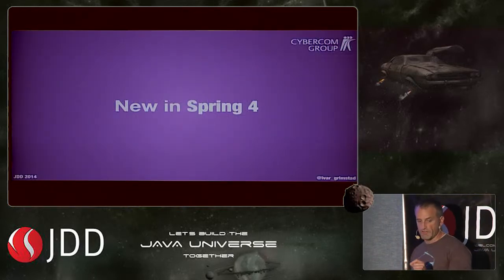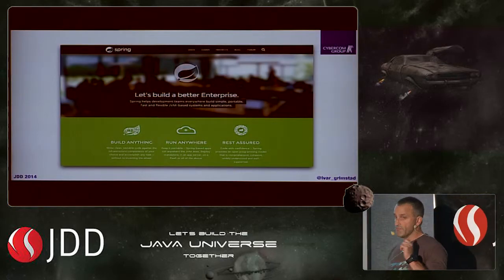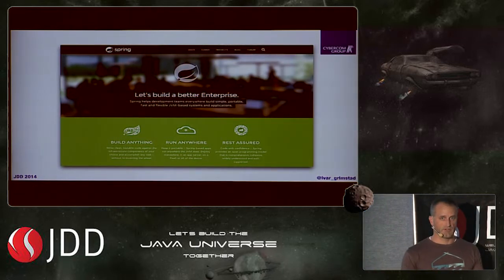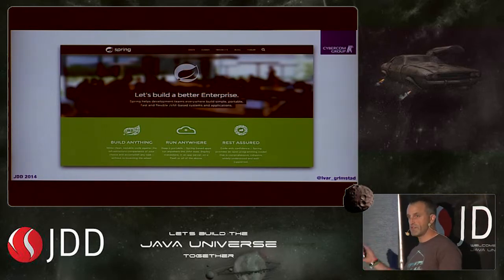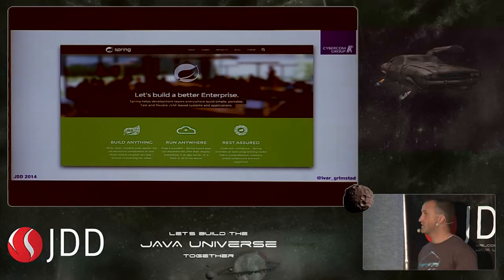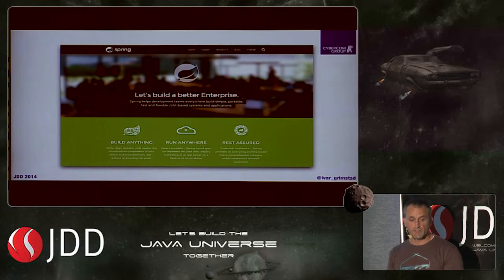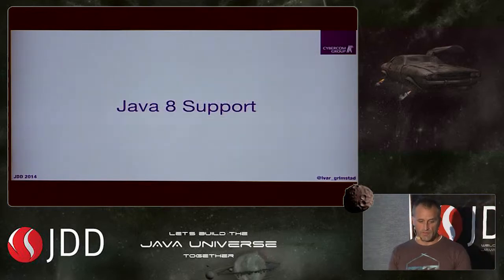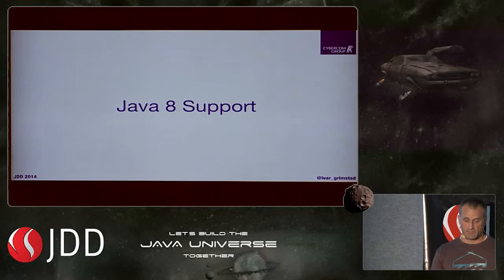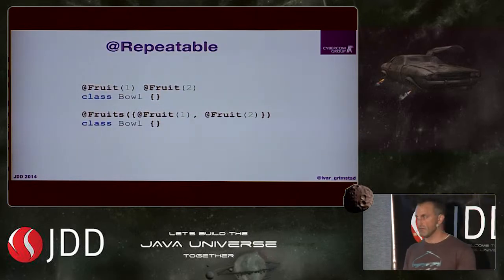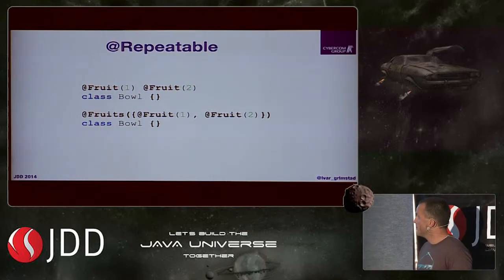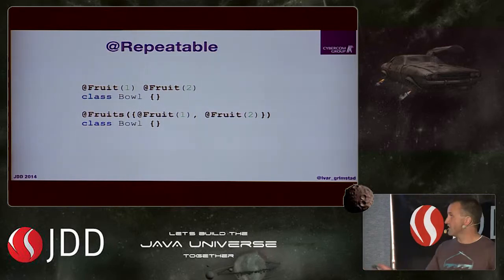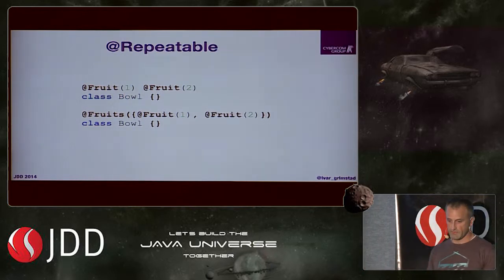What's new in Spring 4? They got a much better website. Have you been to spring.io? It used to be a hassle to find Spring documentation, but now it's easy to find and well documented with good tutorial examples. They also have Java 8 support. They support repeatable annotations, so you don't have to wrap annotations in wrapper annotations — you can just put them on. More expressive and easy to read.